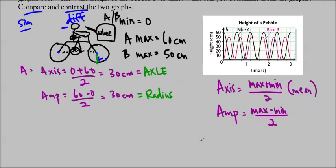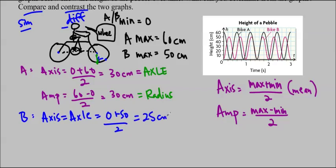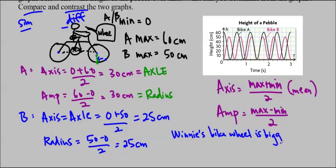For Helen's, the axis is going to be, or the axle, is going to be at 0 plus 50 over 2, which is 25 centimeters. And the radius of her bike is equal to 50 minus 0 over 2, which is also 25 centimeters. So when we're comparing them, we can say that Winnie's bike wheel is bigger and mounted higher. But they're both riding their bikes on the ground. So the minimum is 0 in both cases, because we want to find some similarities as well.